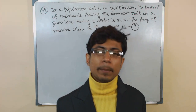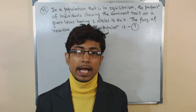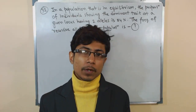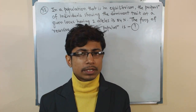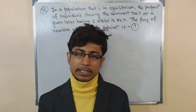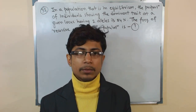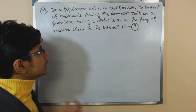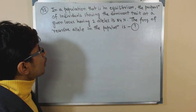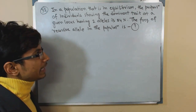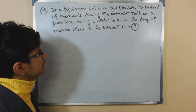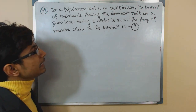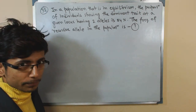Welcome again friends. We are talking about biology problems, and this problem is going to be a population genetics problem. This is from the generalized view — a Hardy-Weinberg equilibrium problem. In a population that is in equilibrium, the proportion of individuals showing the dominant trait at a given gene locus having two alleles is 84%. The question is: what is the frequency of the recessive allele?